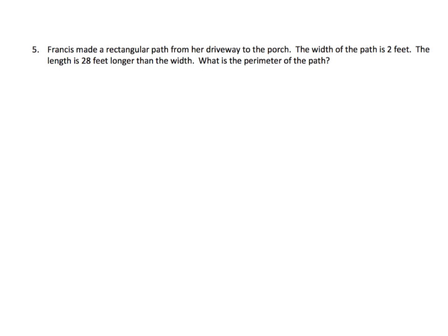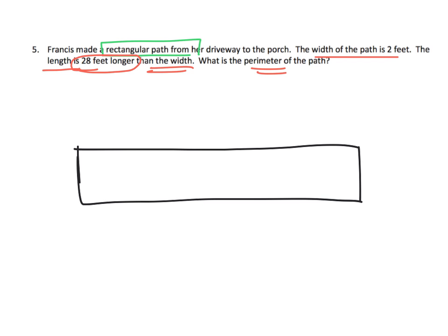Francis made a rectangular path — there's our key piece of information. The width of the path is two feet, and the length is 28 feet longer than the width. What is the perimeter of the path? There is so much going on here, so let's go back: Francis made a rectangular path, so I'm going to draw one.